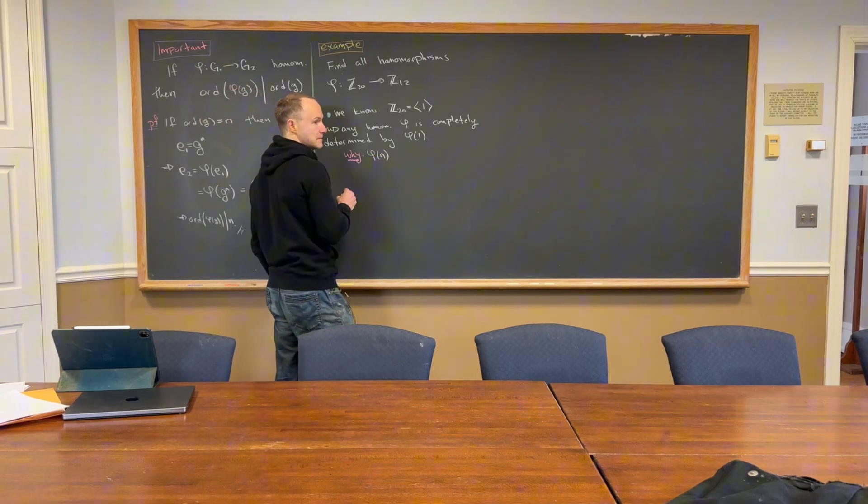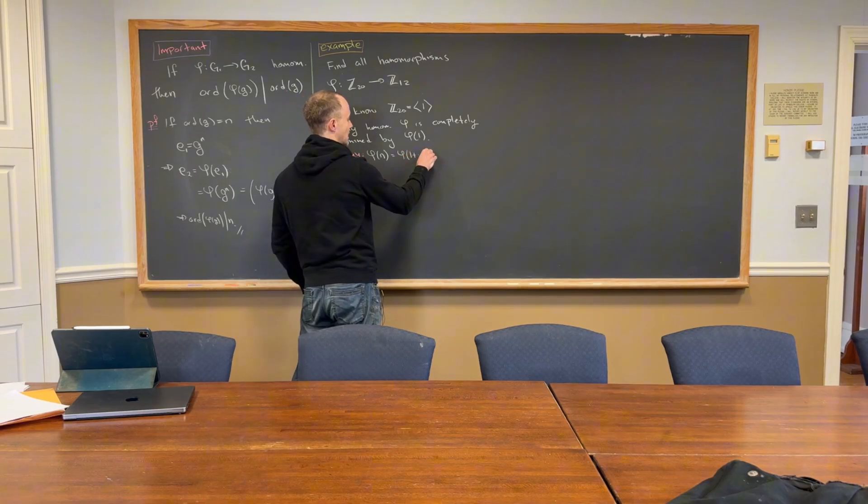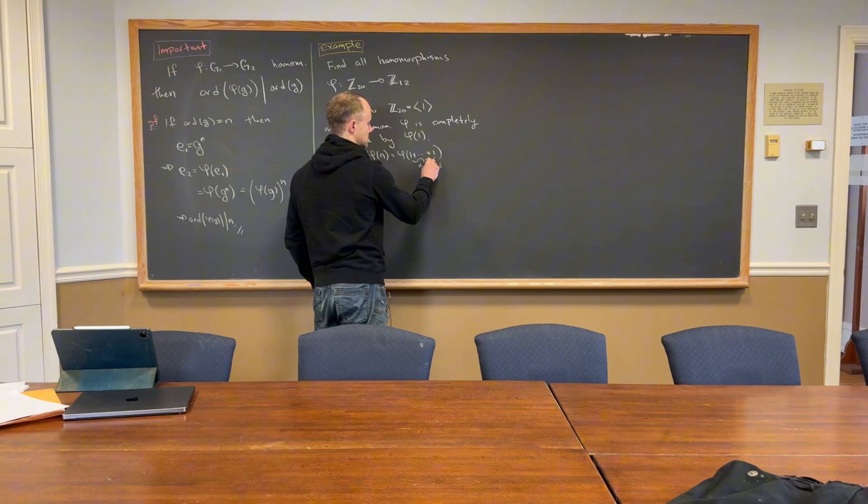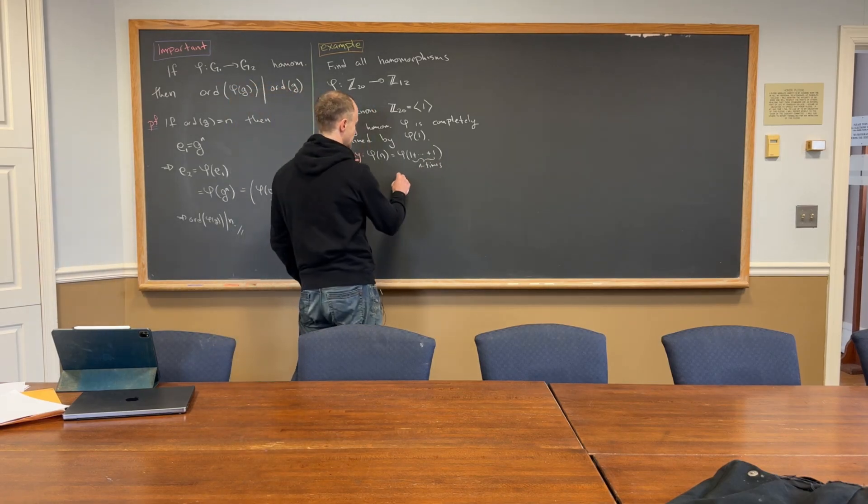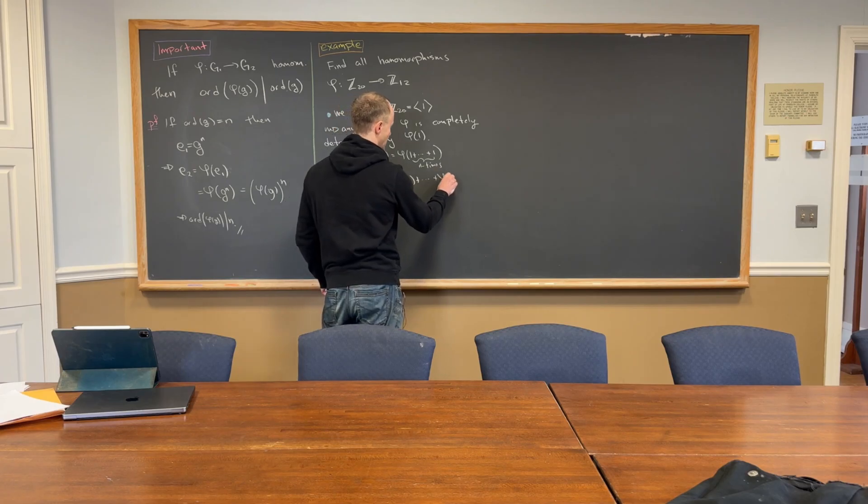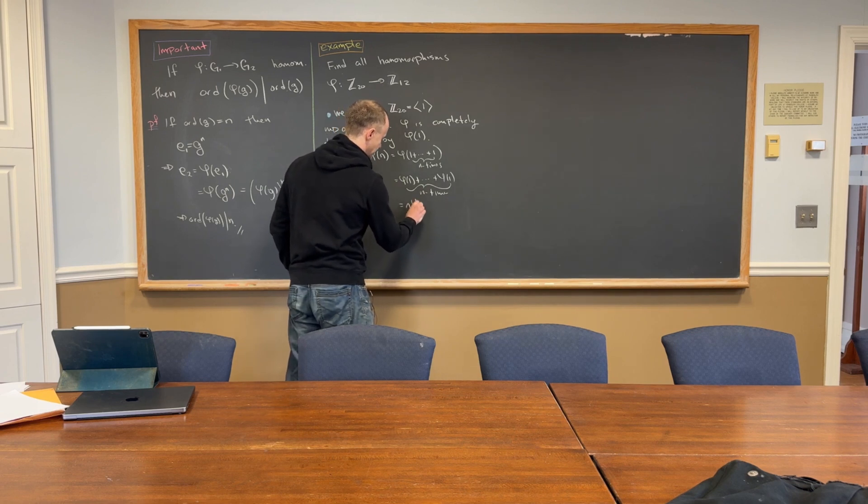We'll have, notice that phi of n is the same thing as phi of one plus one n times, right? But then that's phi of one plus phi of one n times, or in other words, this is n phi of one,